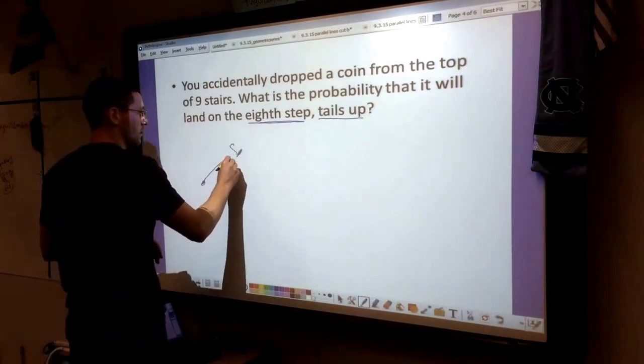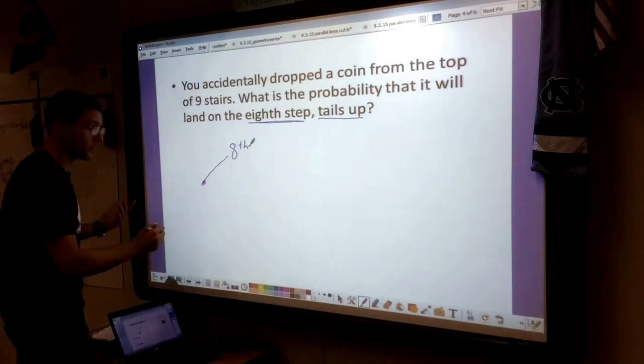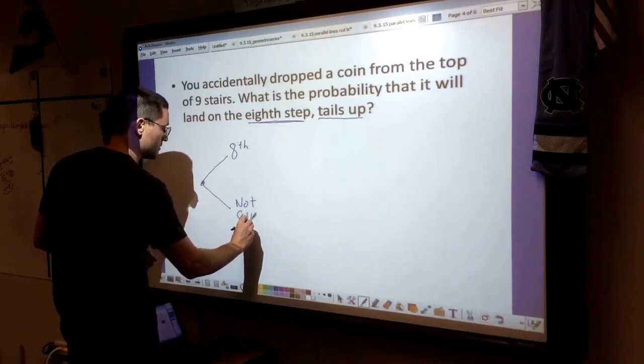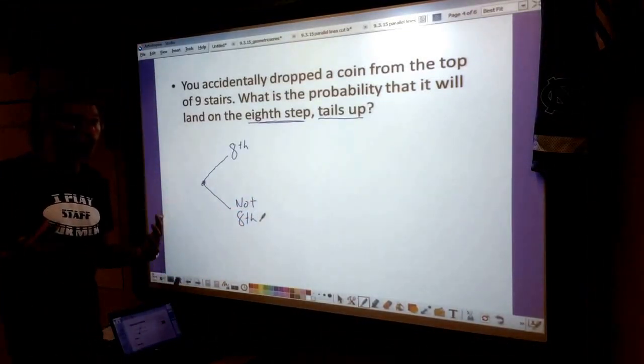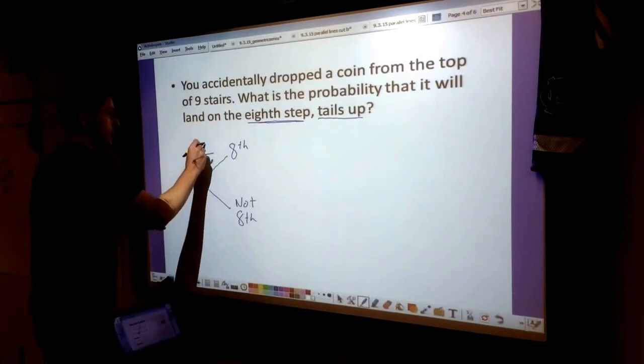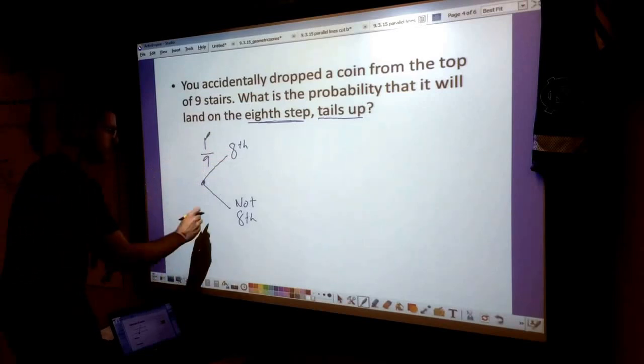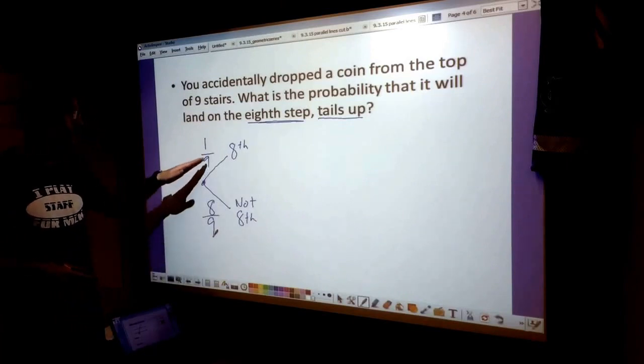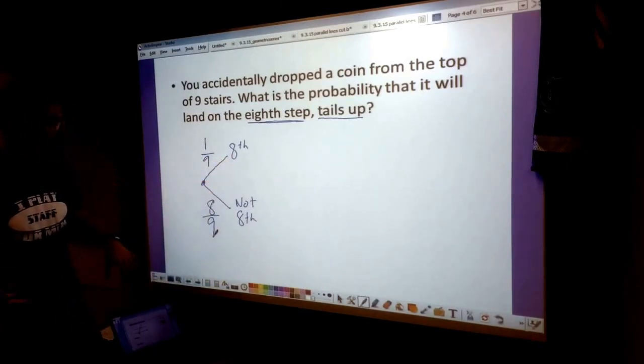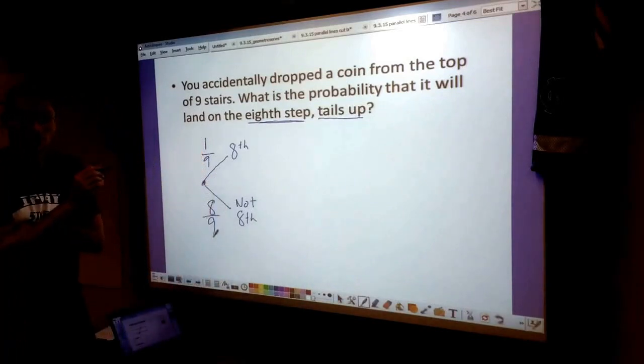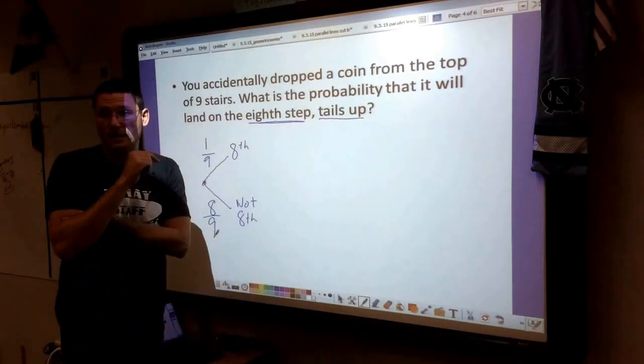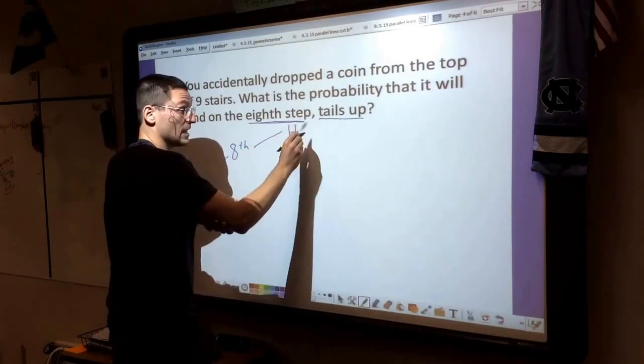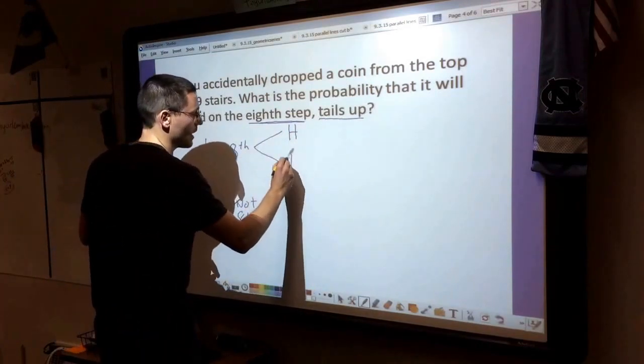So we're going to start our probability tree with the eighth step. It can either land on the eighth step or it can land on any of those other steps, so we'll say not the eighth step. There's 9 total stairs, and only one of those 9 stairs is the eighth step. So there's only a 1 in 9 chance that it lands on the eighth step at all. But that's not even what the problem is asking. It wants it to land on the eighth step and land tails up. So we need to add more branches to this tree. When that coin lands, it can either land heads up or tails up.